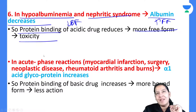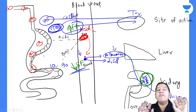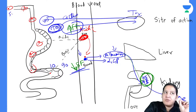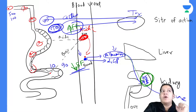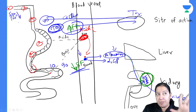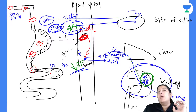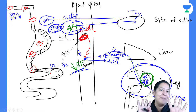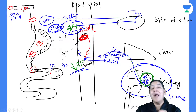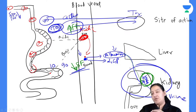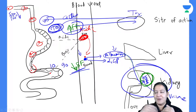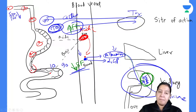In case of hypoalbuminemia or nephrotic syndrome, there is less protein binding and more free form, which will cause toxicity. If such a patient comes to you and your normal dose for that drug is 500 mg, instead of 500 give only 100 or 250 — reduce the dose. This applies to acidic drugs binding to albumin, not to alpha-1 glycoprotein.